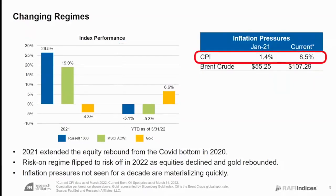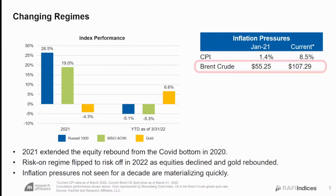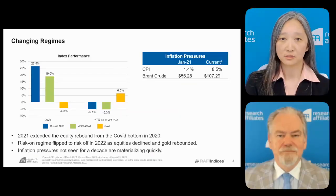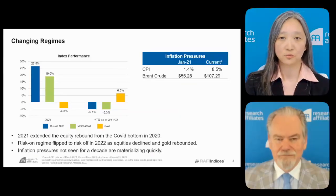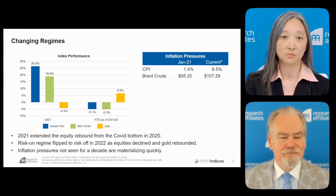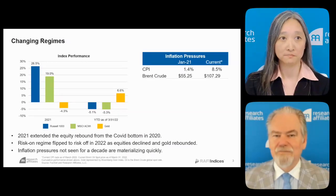CPI, which was less than 2% a year ago, is now running close to 9% at 8.5%, and the oil price has almost doubled. A natural question is how RAFI fares in such regime shifts. I'll turn it over to Rob to begin with the principles of RAFI.